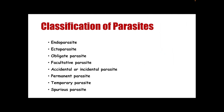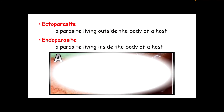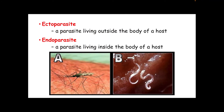For the classification of parasites, we have: endoparasite, ectoparasite, obligate, facultative, accidental or incidental, permanent, temporary, and spurious parasite. The main difference between ecto and endoparasite is in the location of the parasite. When we say ectoparasite, it is a parasite living outside the body of the host. Whereas an endoparasite is a parasite living inside the body of a host. For example, a mosquito is an ectoparasite, whereas a nematode living inside the intestine is an endoparasite.